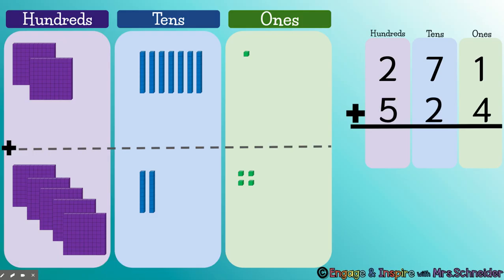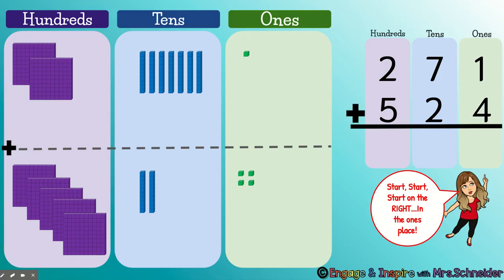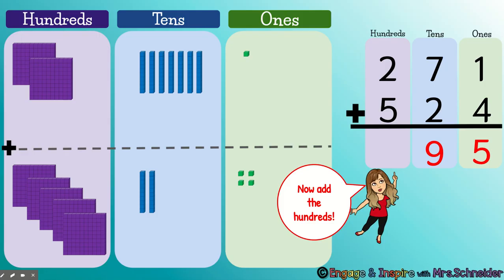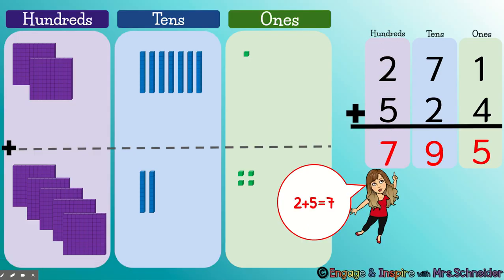What is the answer going to be? We're always going to start on the right in the ones place. 1 plus 4 equals 5. Now we're going to add the tens: 7 tens plus 2 tens. It is easier to say 7 and then keep counting on — 7, 8, 9. So 7 plus 2 is 9. And now we're going to add the hundreds: 2 hundreds plus 5 hundreds — 2 plus 5 equals 7. So 271 plus 524 equals 795.